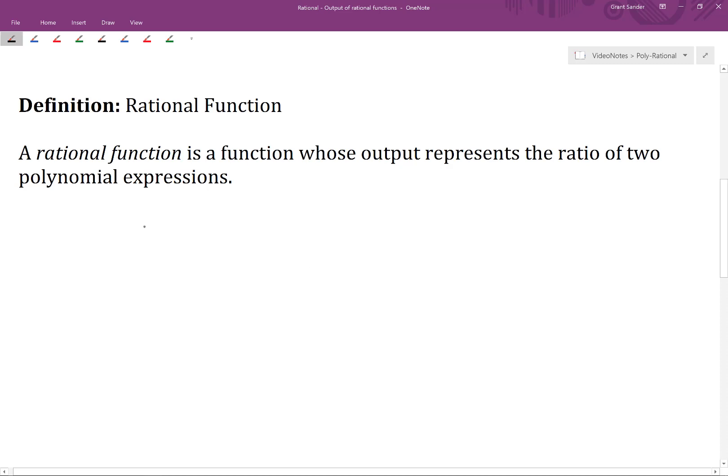Let's come up with some examples of this. So we could say f of x is equal to... if we want to write a rational function or give some examples, all we have to do is write the ratio of any two polynomial expressions. So the constant 1 is a polynomial expression and x is another one. So f of x equals 1 divided by x is a rational function.